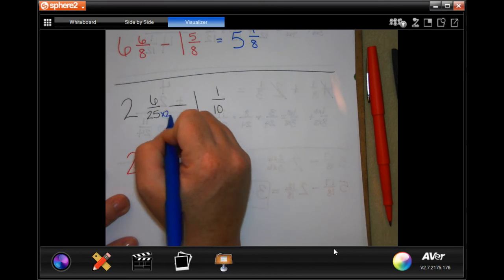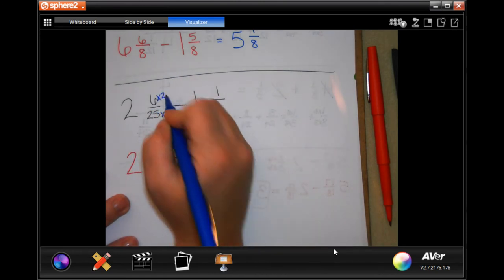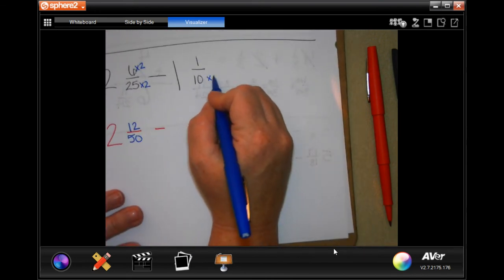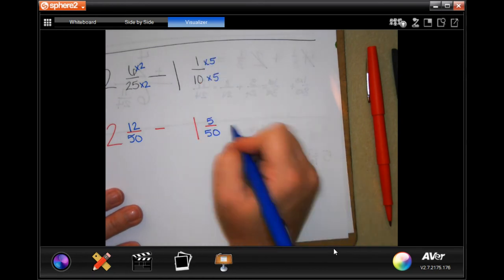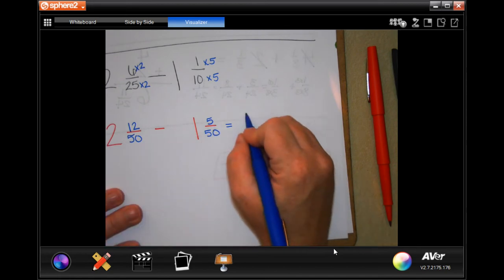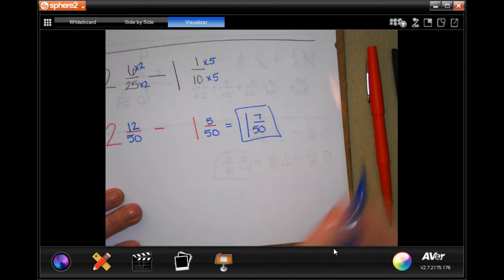Now, 50 times 2 was, or sorry, 25 times 2 was 50. So now I times the top by 2, I get 12. 10 times 5, multiply the top by 5, I get 5. 12 can take away 5, so I'm going to go 2 minus 1 is 1. 12 minus 5 is 7, and my denominator stays the same. 7 is prime and does not go into 50 evenly, so I'm good with my answer. 1 and 7 over 50.